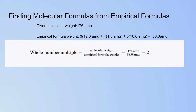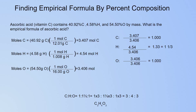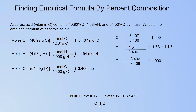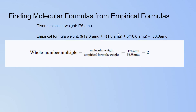You have the molecular weight, but you also need the empirical formula weight. To find it, calculate the mass in AMU of the empirical formula. Carbon: 1 atom weighs 12 AMU, multiplied by 3 carbon atoms. Hydrogen: 1 AMU multiplied by 4 hydrogen atoms. Oxygen: 16.0 AMU multiplied by 3 oxygen atoms. Adding those together gives 88.0 AMU — that's your empirical formula weight.